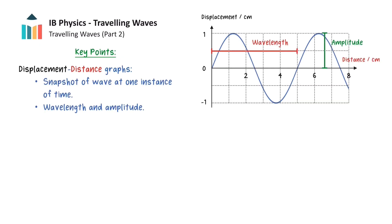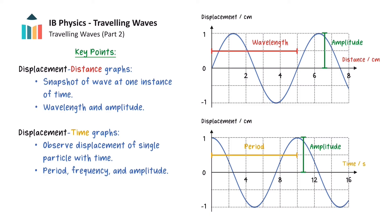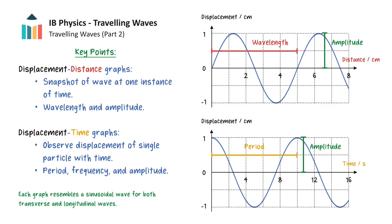We will now provide a final summary of the key understandings from this video. When we graph waves, we hold one of two variables constant. A displacement against distance graph holds time constant, and shows the displacement of all of the points in our medium at a specific instant of time — this allows us to determine both the wavelength and amplitude of the wave. A displacement against time graph holds position in the medium constant, and describes the displacement of a single particle in the medium with time — this allows us to determine the period, frequency, and amplitude of the wave. Each type of graph is sinusoidal in shape for both transverse and longitudinal waves. The graphs can be used in conjunction with one another to determine the wave's speed and direction. This concludes our video about representing waves graphically.